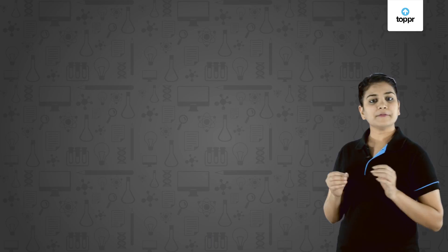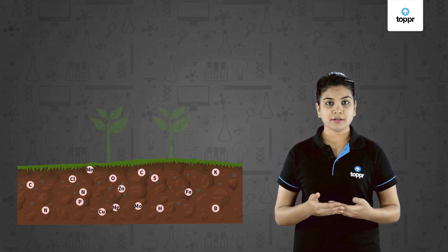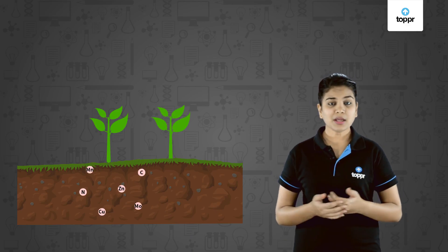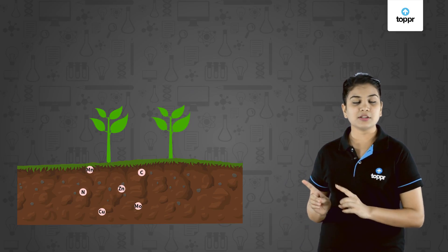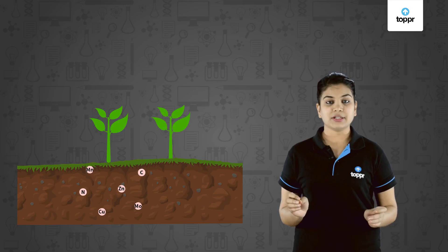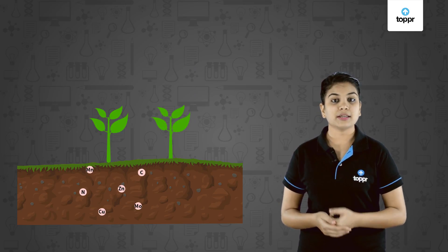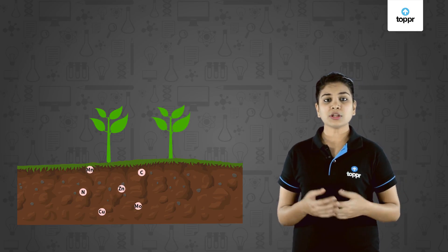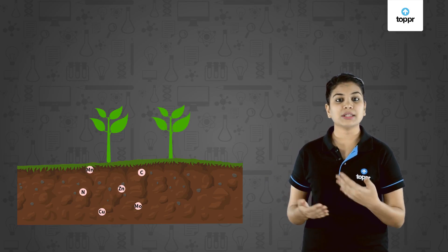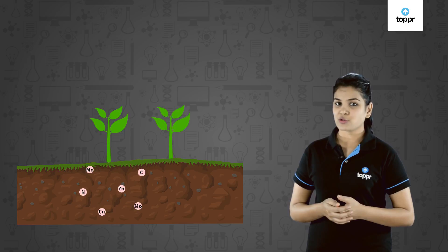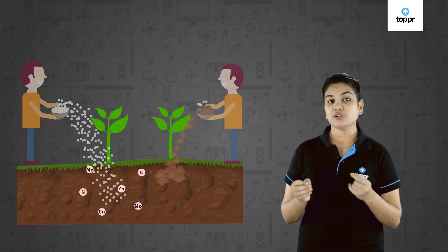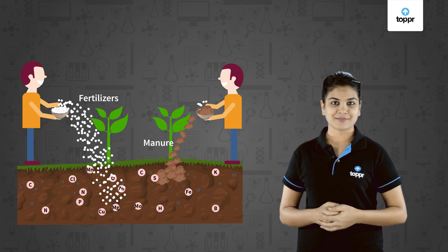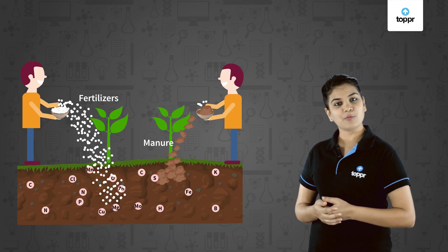When a farmer grows crops in the soil repeatedly, these nutrients get depleted. The deficiency of these nutrients affects various activities of the plant — for example, its growth, susceptibility to diseases, and reproduction. The soil can be enriched by adding nutrients again in the form of manures and fertilizers.